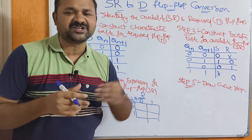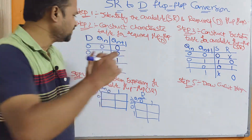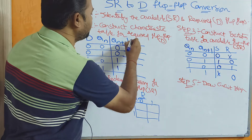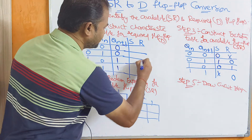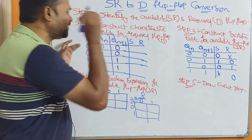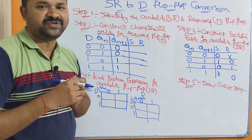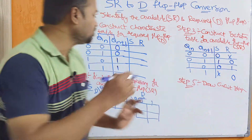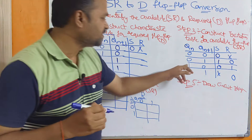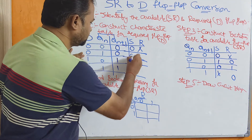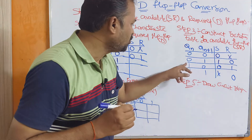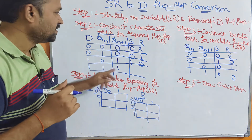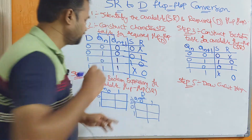Based on the excitation table, we fill in the S and R values. If QN is 0 and QN+1 is 0, then S=0 and R=don't care. If QN=1 and QN+1=0, then S=0 and R=1. If QN=0 and QN+1=1, then S=1 and R=0. If QN=1 and QN+1=1, then S=don't care and R=0.